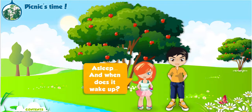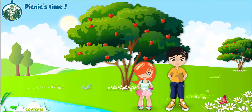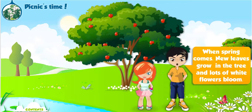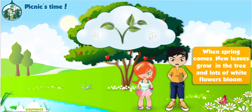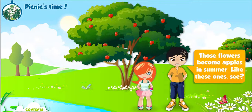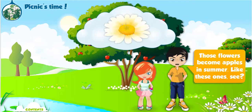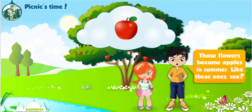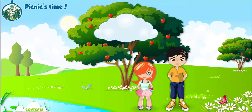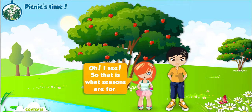Asleep? And when does it wake up? When spring comes, new leaves grow in the tree and lots of white flowers bloom. Those flowers become apples in summer. Like these ones. See? Oh, I see. So that is what seasons are for.